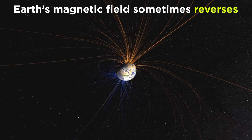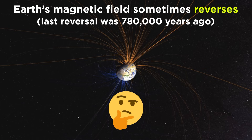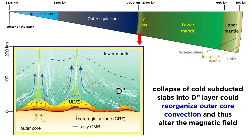Earth's magnetic field undergoes periodic reversals where the field strength drops to near zero and the poles switch. Failed reversals also occur, where the field strength drops to near zero and the original field eventually reestablishes. The last reversal was around 780,000 years ago, and we may be due for one soon. It is not known what triggers magnetic reversals. One hypothesis is the sudden collapse of large amounts of cold, subducted slabs into the D'' layer, which can reorganize outer core convection, altering the magnetic field.